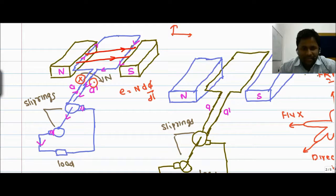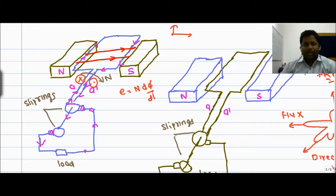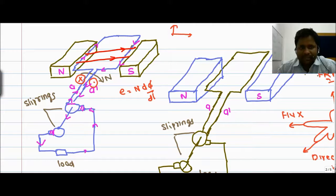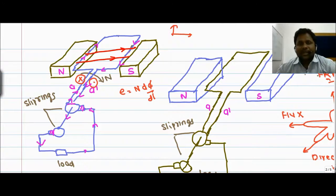Similarly, the current is leaving from the other side through the brush and going towards the load in that direction. We can say that whenever rotating conductors are placed in a constant magnetic field, there is an induced EMF which generates induced current, and the direction of induced current can be determined with the help of Fleming's right-hand rule.